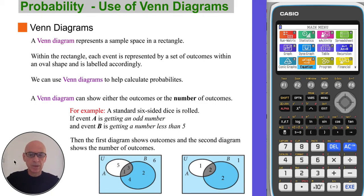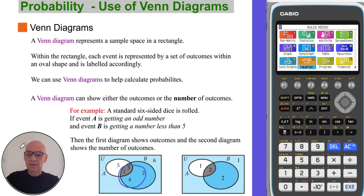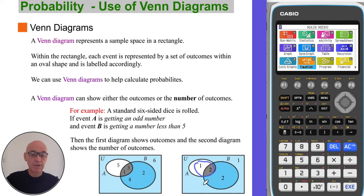In the example below, a dice is rolled. Event A is getting an odd number — you can see the odd numbers inside oval A. Event B is getting a number less than five — you can see those numbers inside oval B. The diagram to the right shows the number of outcomes: oval A has three outcomes (1, 3, and 5), oval B has four outcomes, and there are two outcomes in common.